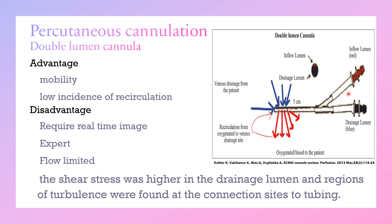As a double-lumen cannula has two lumens — an inflow lumen and a drainage lumen — they open into a single lumen which is divided into two parts; the drainage lumen is twice the size of the inflow lumen. The advantages of the double-lumen cannula include easy patient mobility, single-site insertion, and a low incidence of recirculation. The disadvantages include the requirement for real-time imaging, the need for an expert team for insertion, flow limitation in patients with high body mass index, higher shear stress in the drainage lumen, and regions of turbulence at the connection site to the tubes.